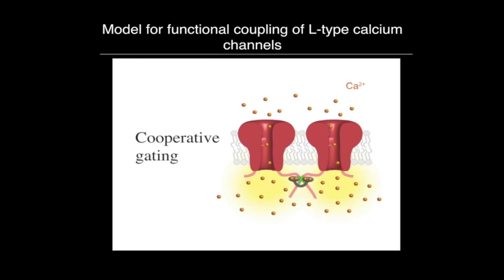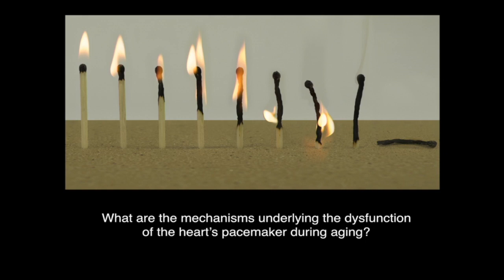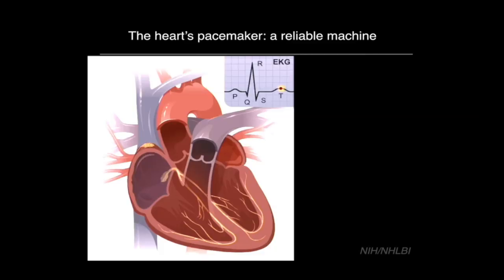Now I'll switch gears a little bit. We're going to keep talking about L-type calcium channels, but in a different context more related to what I'm doing right now in the lab. The main questions we are trying to answer are: what are the mechanisms underlying the dysfunction of the heart's pacemaker during aging? Let me tell you about the pacemaker for those not familiar with this tissue.